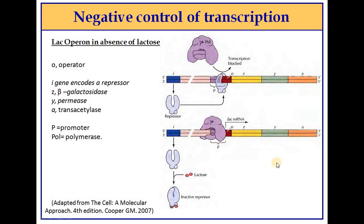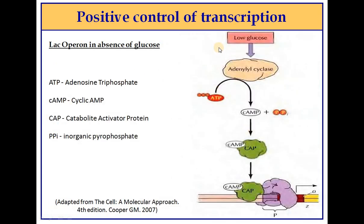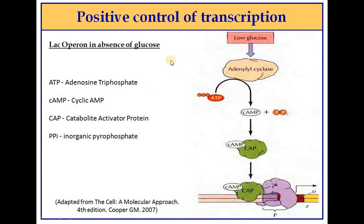Now we can see positive control of transcription. When bacteria experience a decrease in glucose, under low glucose conditions, adenylyl cyclase converts ATP to cAMP (cyclic AMP), releasing inorganic pyrophosphate. This cAMP binds to CAP — the catabolite activator protein. When cAMP binds to CAP, the complex then binds to the alpha subunit of RNA polymerase, stimulating it and starting transcription. This is positive control of transcription.